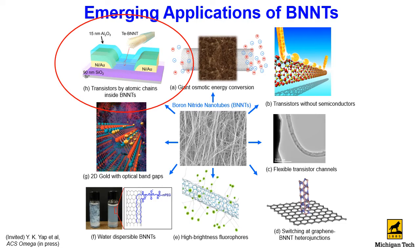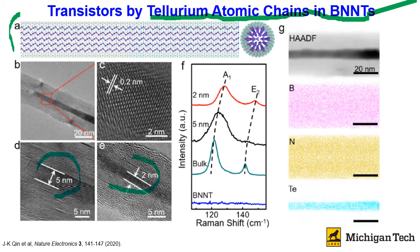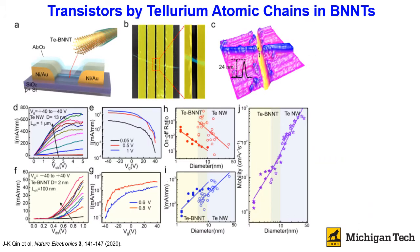Let us talk about transistors by atomic chains inside boron nitride nanotubes. In collaboration with colleagues at Purdue University, we have constructed transistors by 3D atomic chains filled inside boron nitride nanotubes as schematically drawn here. We can fill the nanotubes down to a diameter of 5 nm as well as 2 nm. We have compared the transport properties of tellurium nanowires with tellurium atomic chains filled inside boron nitride nanotubes. Tellurium nanowires are always p-type in transport nature, as also indicated in this graph.